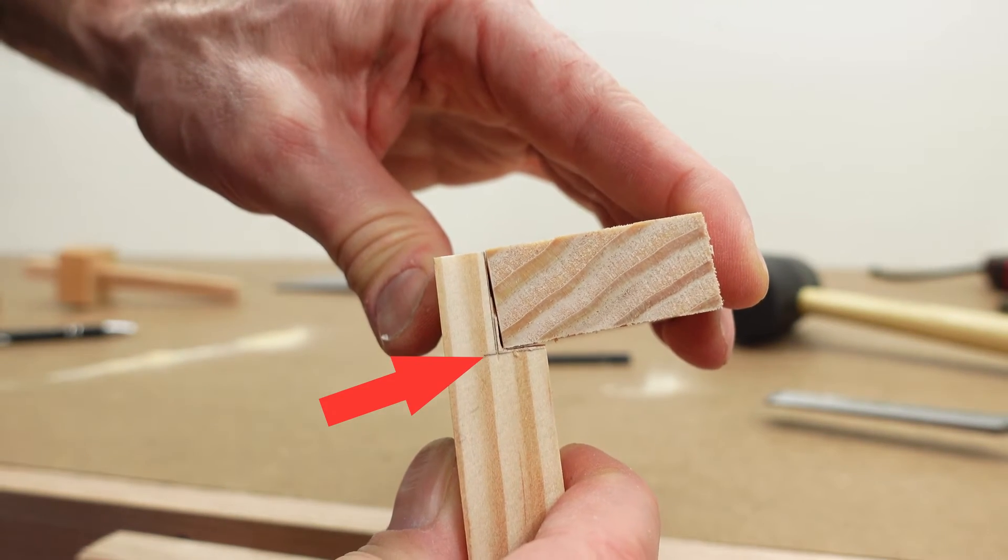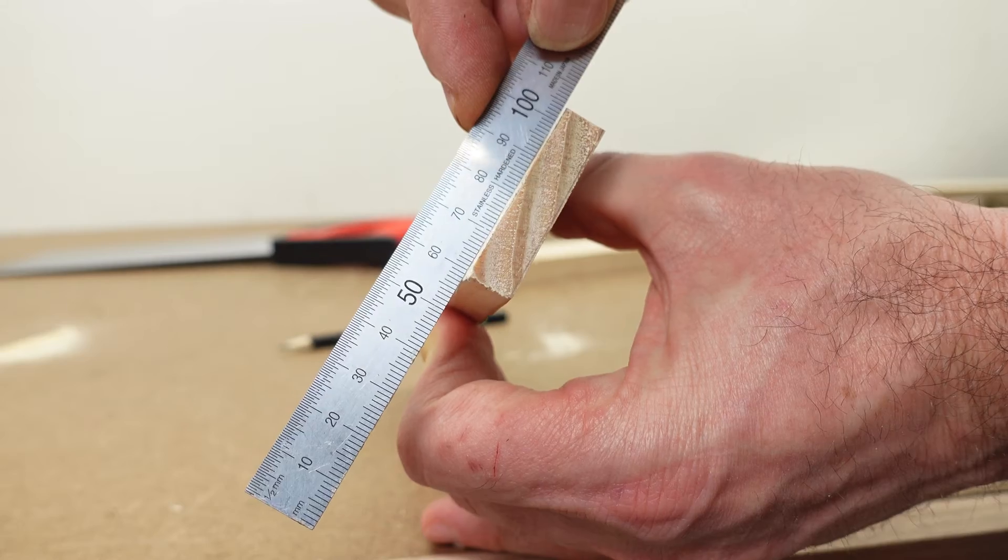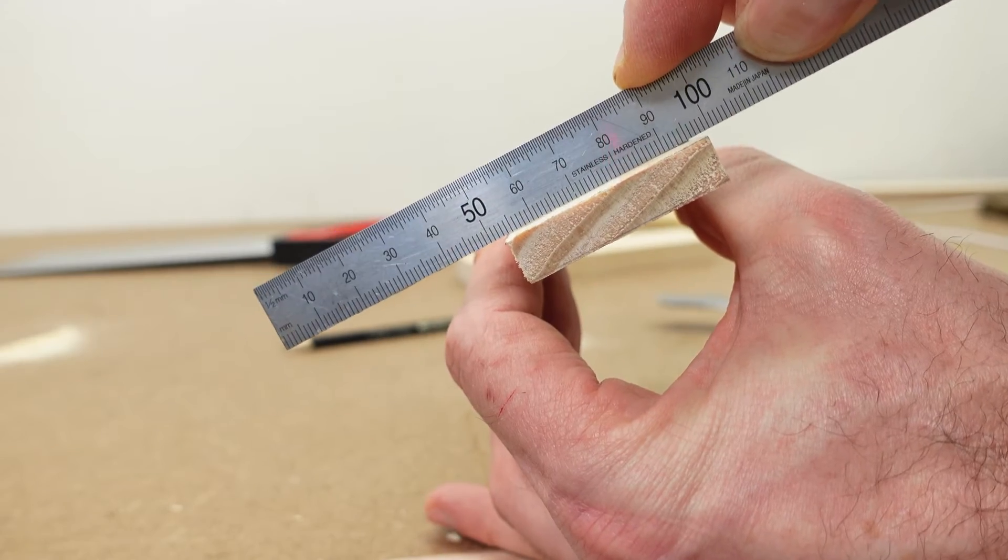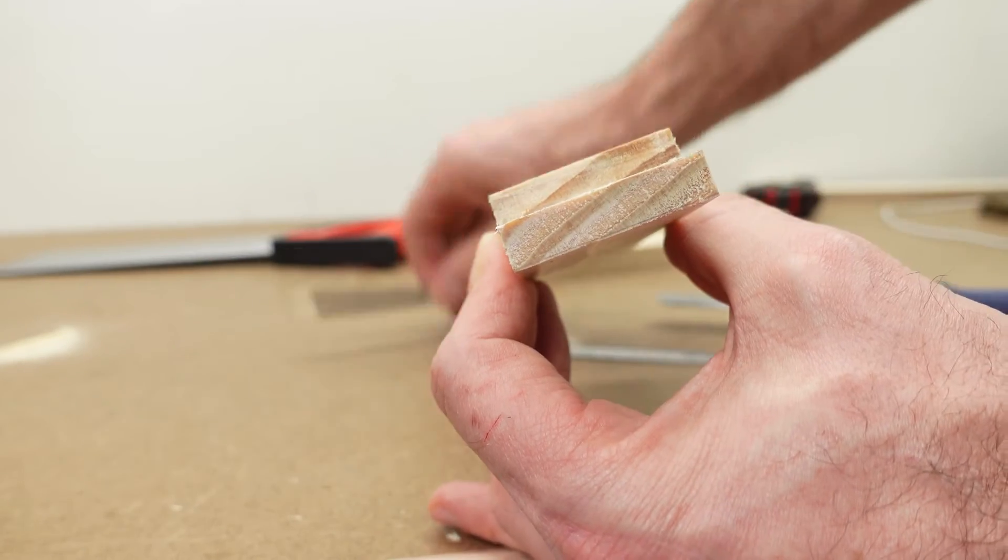And still, there's a bit more adjusting to do. You can also use a steel ruler to check for flatness across the joint surface. Use a pencil to mark out material that still needs removing.